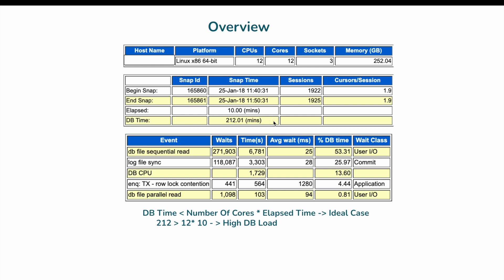Going back to the formula discussed in case study number one: the number of cores (12) multiplied by the elapsed time (10) should be greater than the database time — that is when we say the database is lightly loaded. In this case, 12 into 10 is 120, but the database time is 212 minutes, so the database is overloaded to close to two times of what it can handle.